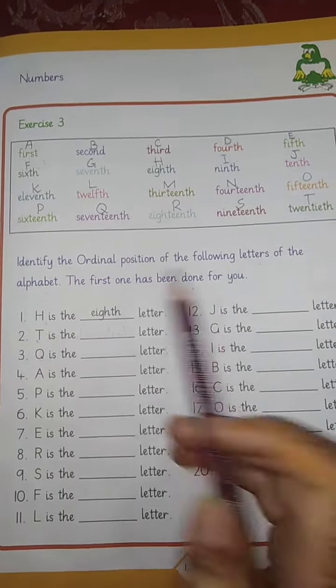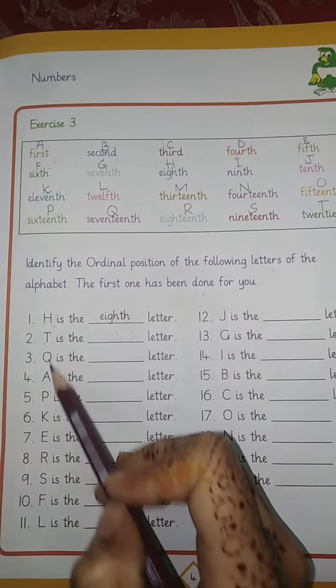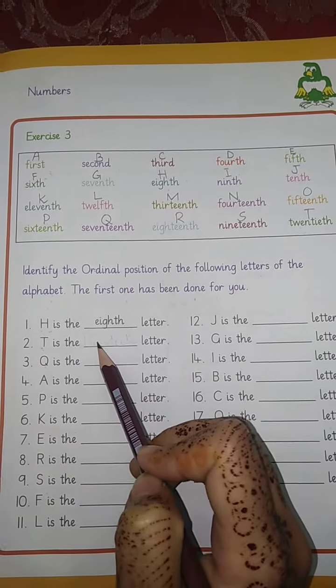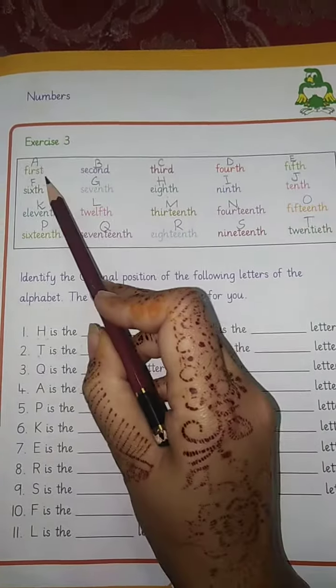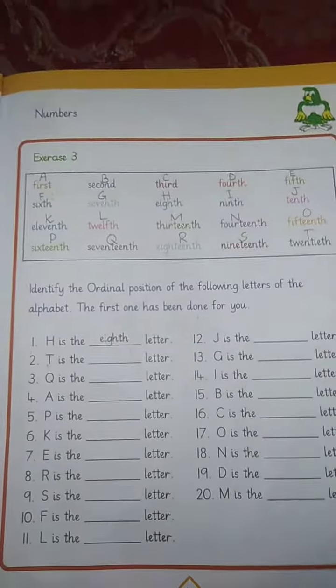We have the ordinal position of the alphabet. We have done it and we have the ordinal position. As you can see, I have made my alphabet A to T. Do it.